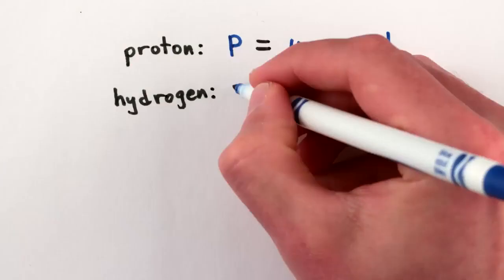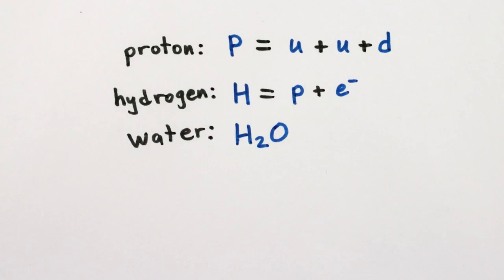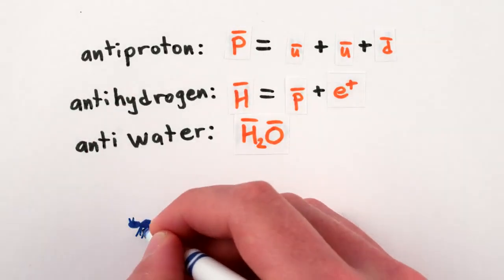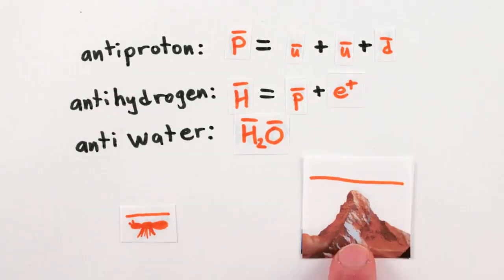Since antimatter particles are essentially identical to regular matter, other than the opposite charge thing, they can combine together in essentially identical ways to form anti-protons, anti-atoms, anti-molecules, and in principle, anything from anti-ants to anti-matter horns.